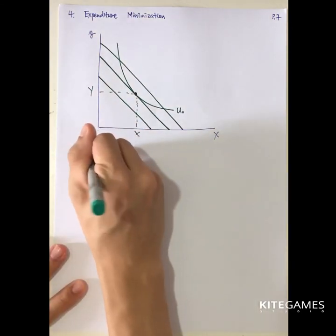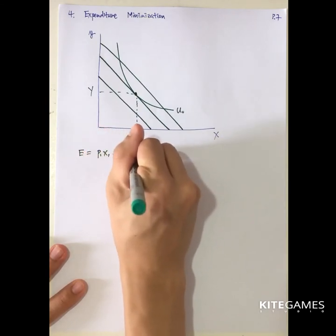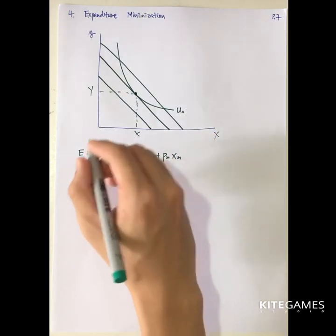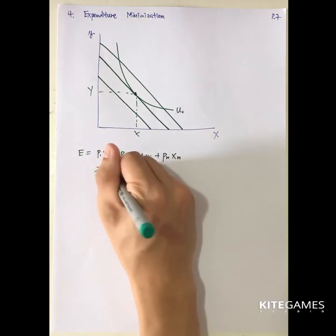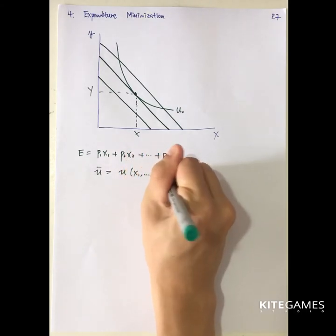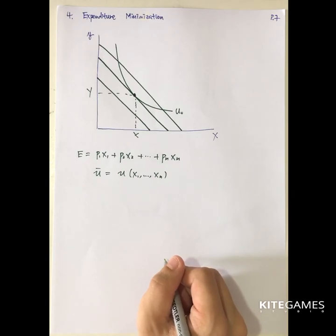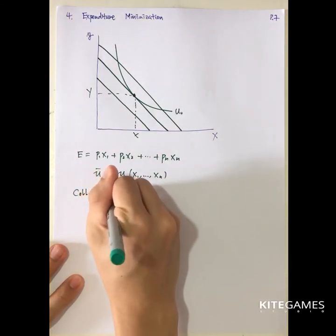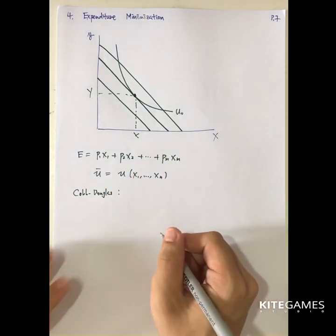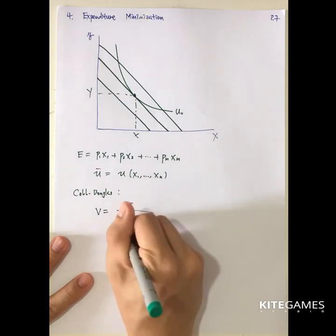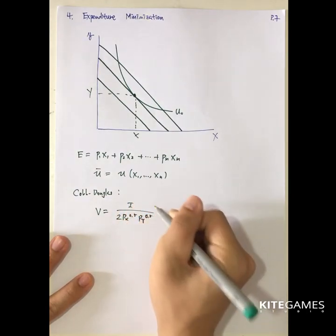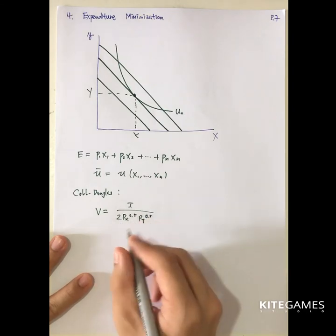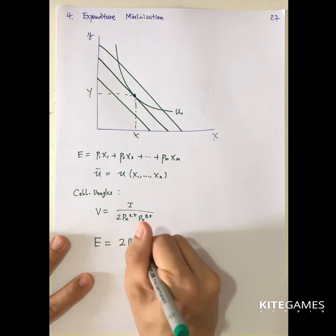The expenditure function is given by P1·x1 + P2·x2 + ... + Pn·xn, which is the same as your income function. The problem is to minimize this expenditure subject to a given utility level. For the Cobb-Douglas example, you start from the indirect utility function; since the expenditure function equals income, you multiply both sides by the denominator, giving the expenditure function equal to Px^0.5.